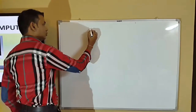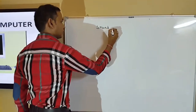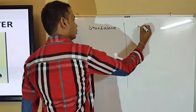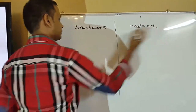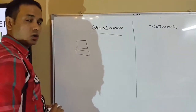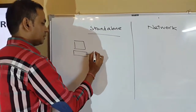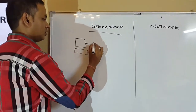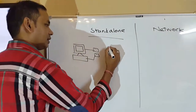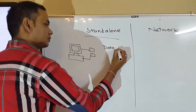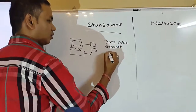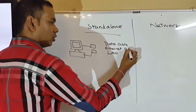Let us start to describe what is a standalone computer and the difference between a network. A standalone computer is a computer that is not connected to a network. The screen and the CPU might be on, but this computer has no data cable, or what we call an Ethernet cable, or LAN cable. LAN is local area network.